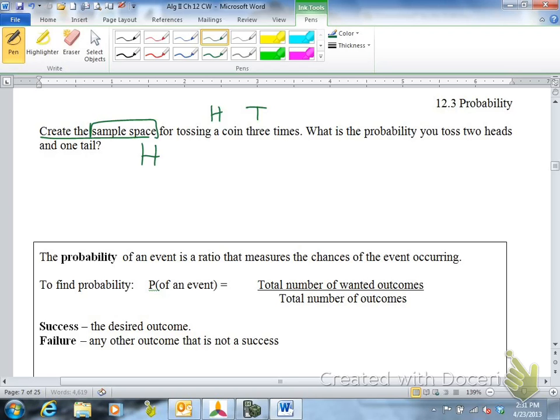The sample space would be you can get all heads. We've done this before. You can get two heads and a tail, or head, tail, head, or tail, heads, heads. You can get one head and two tails, or two tails and a head, or a head, or a tail, head, tail.